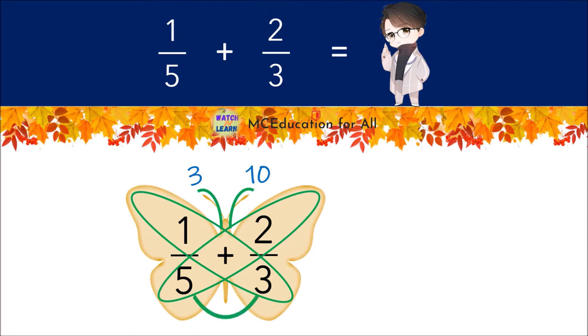One times three is three and five times two equals ten. Next we give our butterfly a body and multiply the denominators. Five times three is fifteen, we put the product inside of the body. Now we add the numbers in our antenna. Three plus ten equals thirteen. Thirteen is the numerator, the number in the body fifteen is our denominator.